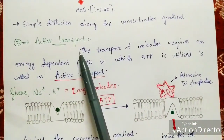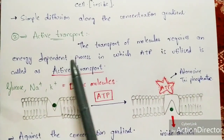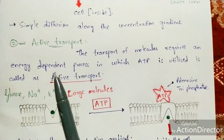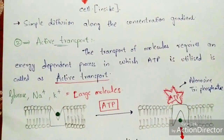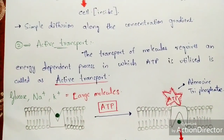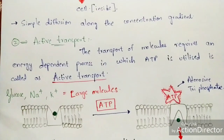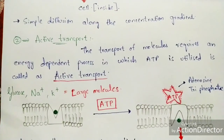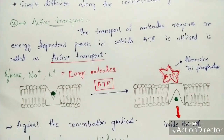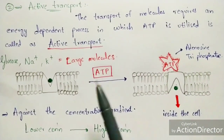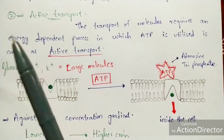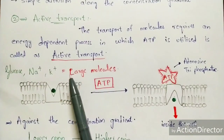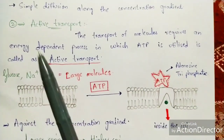Active transport is the transport of molecules that requires an energy-dependent process in which ATP is utilized. Active transport is quite opposite to passive transport. In passive transport, ATP molecules are not utilized, but in active transport, energy — ATP — is used. In passive transport, small or polar molecules are transported, whereas in active transport, non-polar molecules, also called large molecules, are transported.